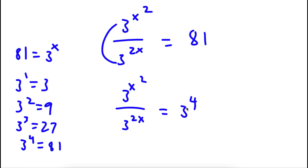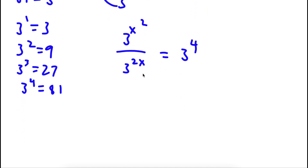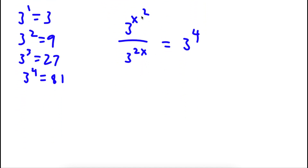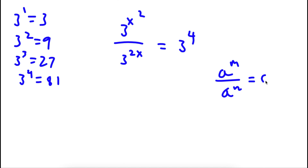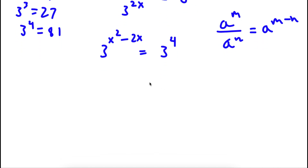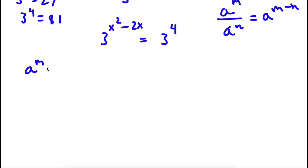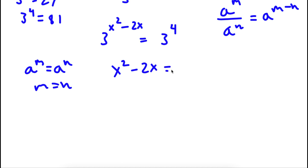Now all our terms have a base of 3. If I have something in the form a to the power of m over a to the power of n, this is equal to a to the power of m minus n. So 3 to the power of x squared over 3 to the power of 2x is going to equal 3 to the power of x squared minus 2x. Now this is equal to 3 to the power of 4. Since the bases are equal, x squared minus 2x is equal to 4.